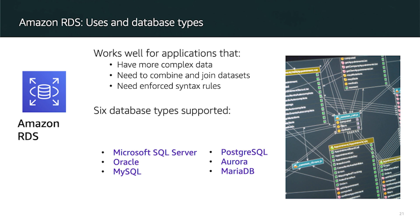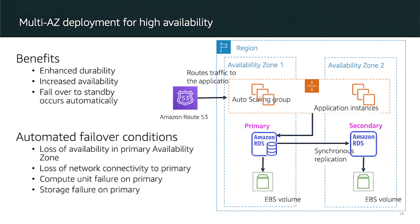When you create a database instance, you must first specify which database engine to run. Amazon RDS currently supports six database engines: MySQL, Amazon Aurora, Microsoft SQL Server, PostgreSQL, MariaDB, and Oracle Database.